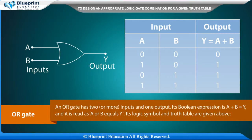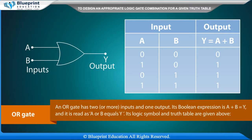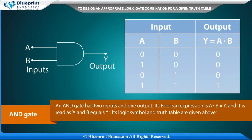An OR gate has two or more inputs and one output. Its boolean expression is A plus B equals Y, and it is read as 'A or B equals Y'. Its logic symbol and truth table are given above.